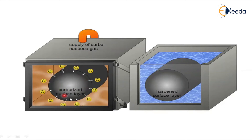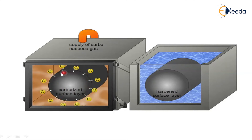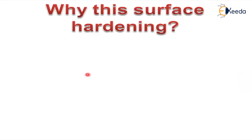One surface hardening technique involves adding carbon to the surface — this is carburization. In carburization, the carbon percentage on the surface increases compared to the core area. By increasing the percentage of carbon at the surface, the hardness of the surface increases and becomes greater compared to the inner surface.